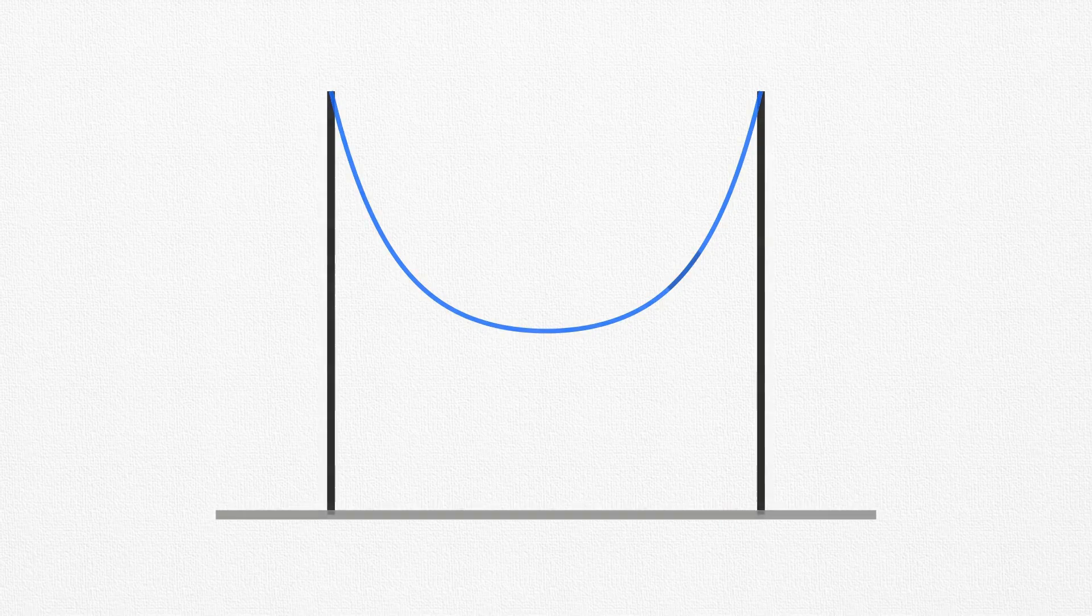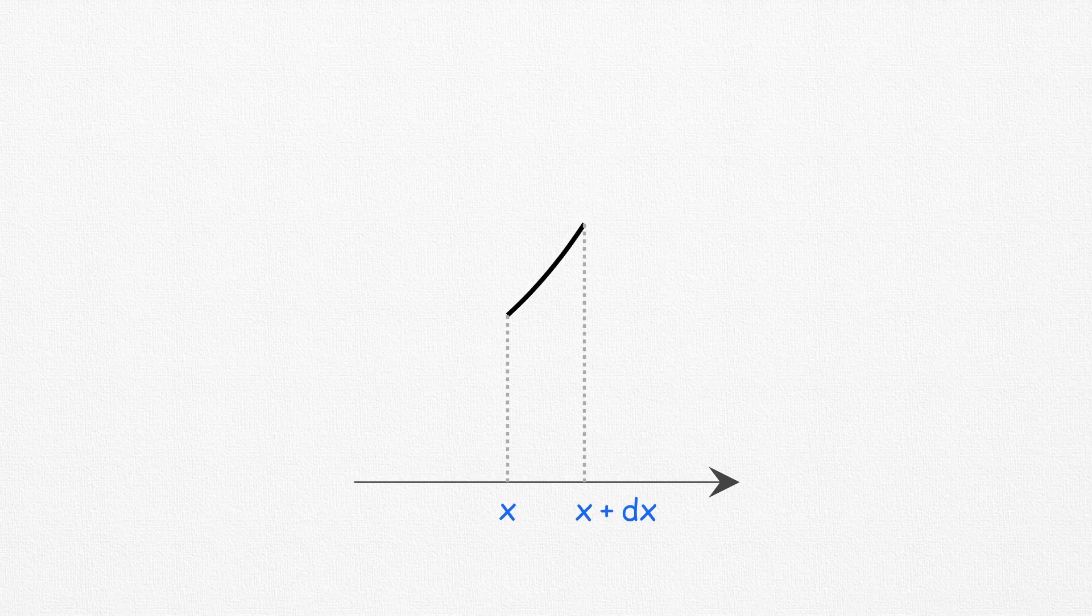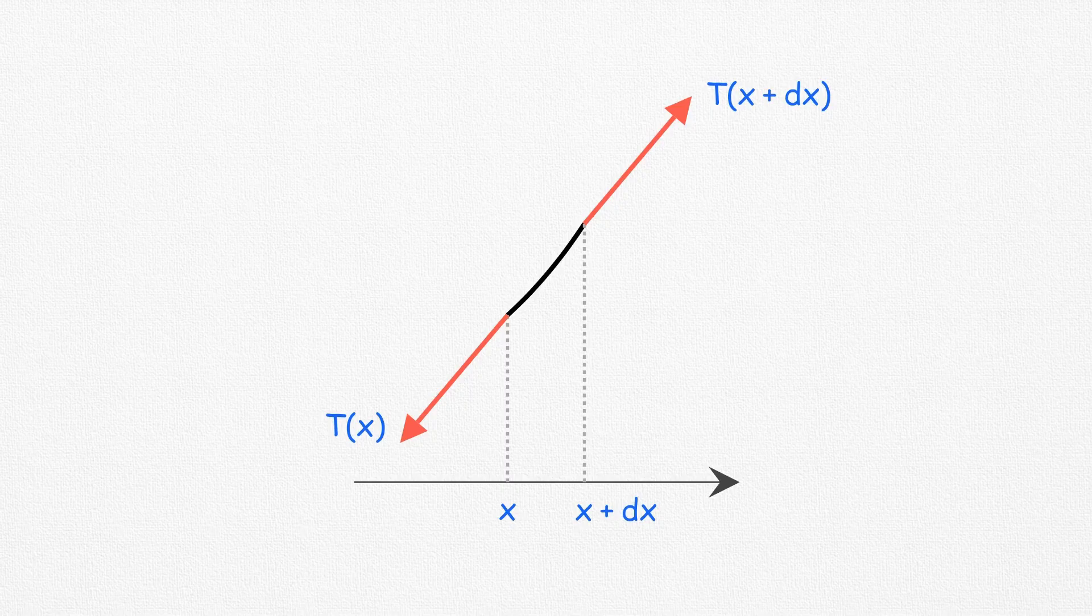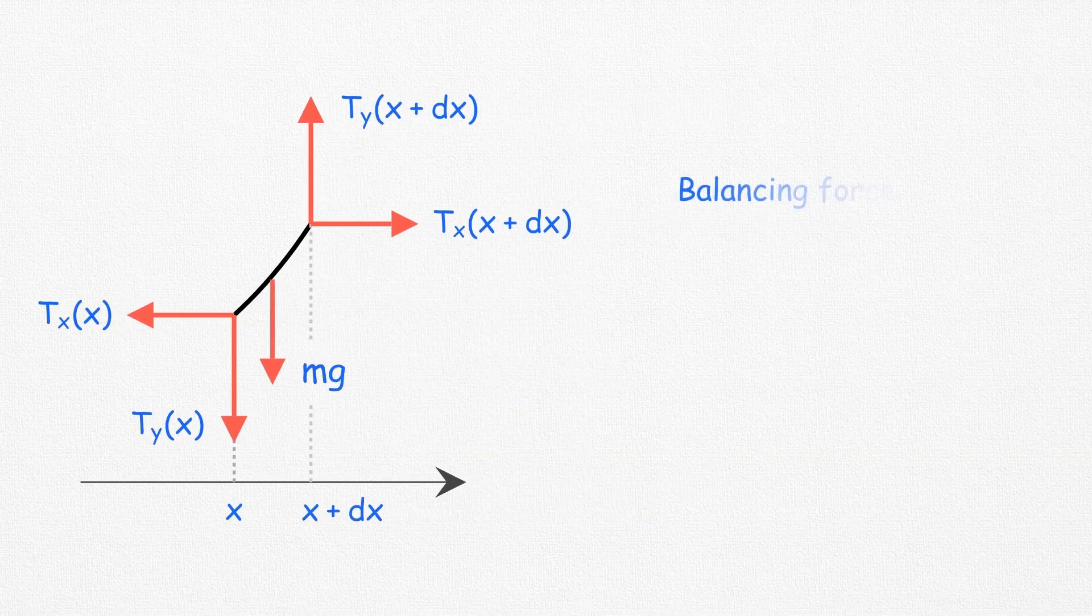Let's now understand the forces that give rise to this elegant shape. Consider a tiny segment of the wire at position x, spanning a length dx along the x-axis. Without loss of generality, we can assume the tension in the wire is a function of x. The segment is pulled to the right by T(x + dx) along the wire, and pulled to the left by T(x); gravitation acts downwards.